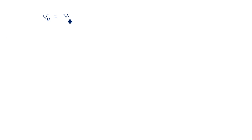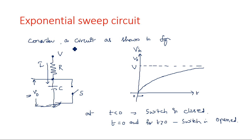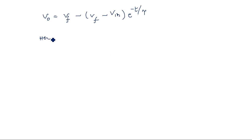The output voltage V0 can be written as: V0 = V_final minus (V_final minus V_initial) times e to the power of minus t by tau. This is the standard expression for the output voltage across a capacitor charging from minimum to maximum. The final value is V (the capacitor charges up to V), and the initial value V_initial is 0 since the capacitor is initially uncharged. The time constant tau equals RC.